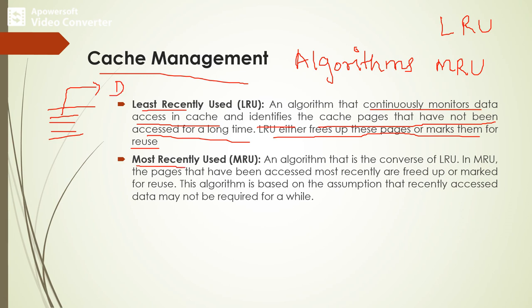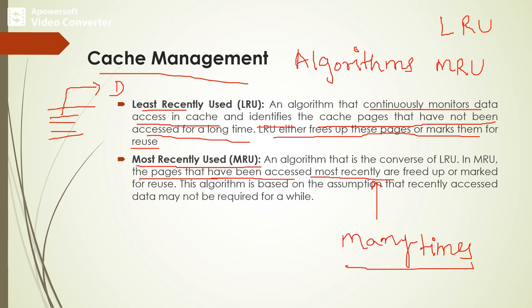The MRU (Most Recently Used) algorithm is the reverse of LRU. In MRU, the pages that have been accessed most recently — meaning those pages have already been accessed many times by the host — are assumed to not be accessed in future. Based on that concept, those set of pages are deleted from the cache. This is how we can manage the cache space whenever the cache is full.